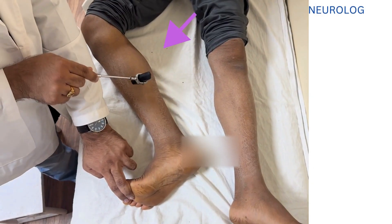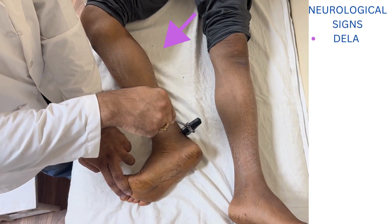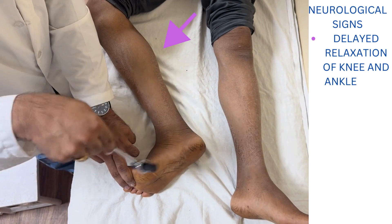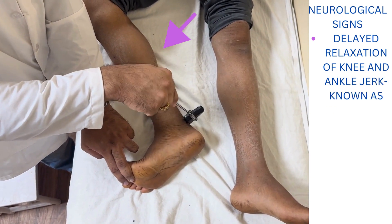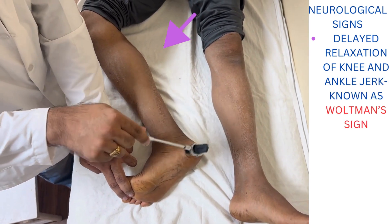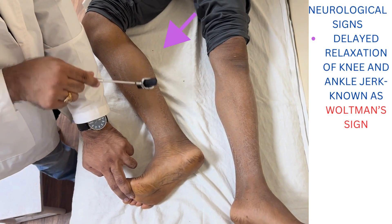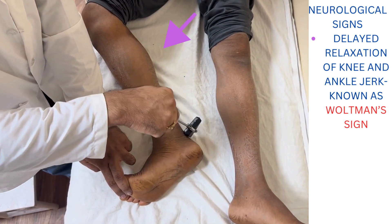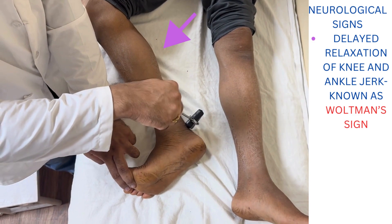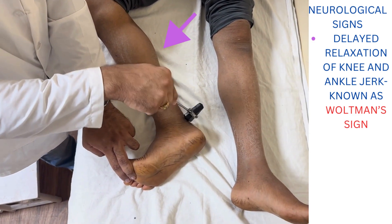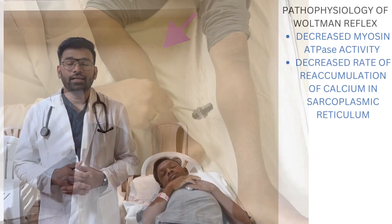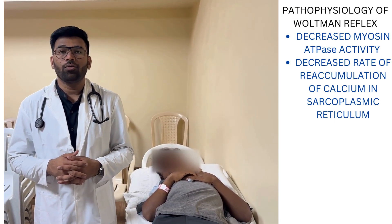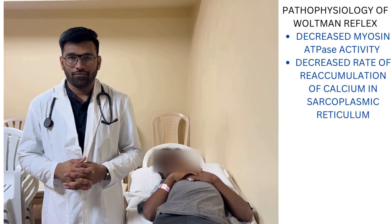On neurological examination, we demonstrate here the ankle reflex. We can clearly see the delayed relaxation of the ankle reflex. This is called the Woltman reflex or the hung-up reflex — delayed relaxation of the deep tendon reflexes.